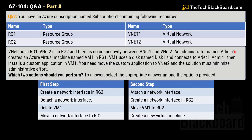An administrator named Admin1 creates an Azure virtual machine named VM1 in RG1. VM1 uses a disk named Disk1 and connects to vNet1. Admin1 then installs a custom application on VM1. You need to move this custom application to vNet2, and the solution must minimize administrative effort. Which two actions should you perform?